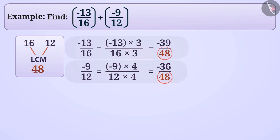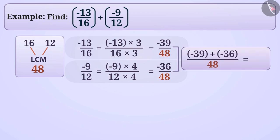Since denominators are equal, we can sum them. The result of their sum will be minus 75 by 48.